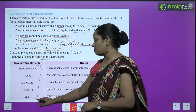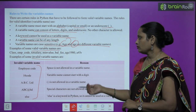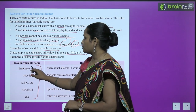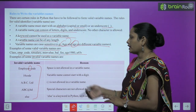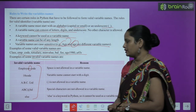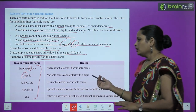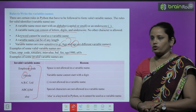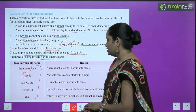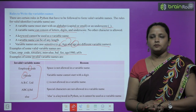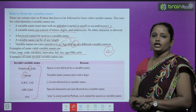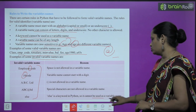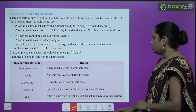Examples of invalid variable names: 'employee code' — space is not allowed in a variable name. A variable name cannot start with a digit. 'a.b.c.limited' — dot is not allowed. 'abc@ltd' — special characters are not allowed; only underscore is permitted. 'else' — else is a keyword in Python and so it cannot be used as a variable name.